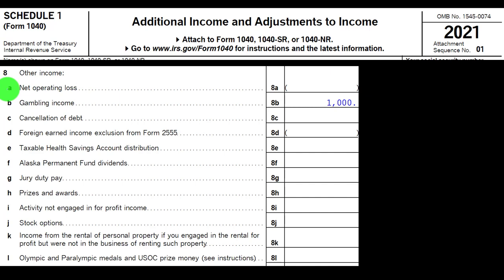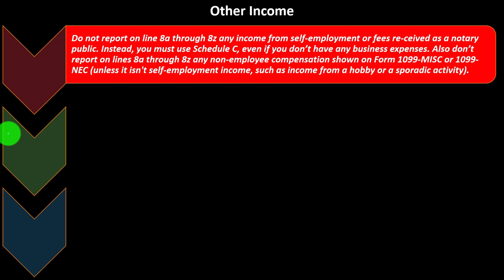You can dive into them in more depth if applicable to you — like the net operating loss, gambling income, cancellation of debt, foreign earned income, and so on. We'll go into some of these in more detail. Important: do not report on lines 8A through 8Z any income from self-employment or fees received as a notary public.